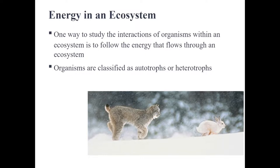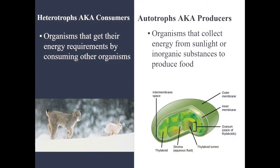An autotroph is any organism capable of making its own food, and a heterotroph is any organism that relies on other organisms to consume to get its energy. While you might want to say all producers use photosynthesis, there are bacteria that use deep sea energy events for their energy. Heterotrophs are very simple — they get their food by consuming other organisms directly. Autotrophs make their own food, whether it is from sunlight or from chemical synthesis.